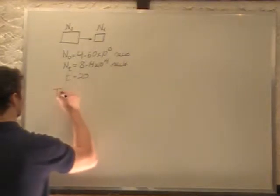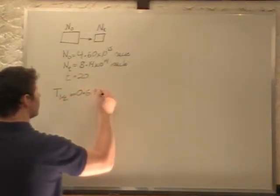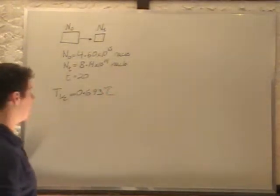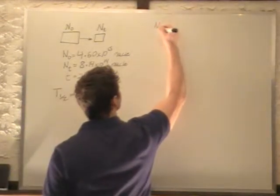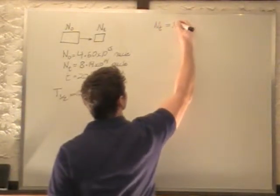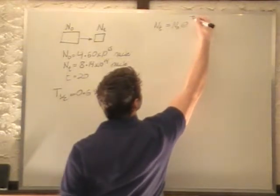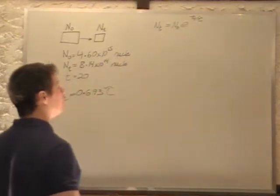Half-life is given by 0.693 times tau. Tau we get from our formula: the number of things at time t equals the number of things at time 0 times e to the minus t over tau. So we have to solve for tau to figure out what tau is.